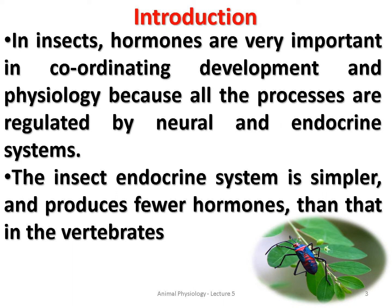In insects, the hormones are very important in coordinating, developing, and physiological processes. All these functions are regulated by the neuroendocrine system. The endocrine system in insects is very simple and it produces very few hormones compared to that in vertebrates.